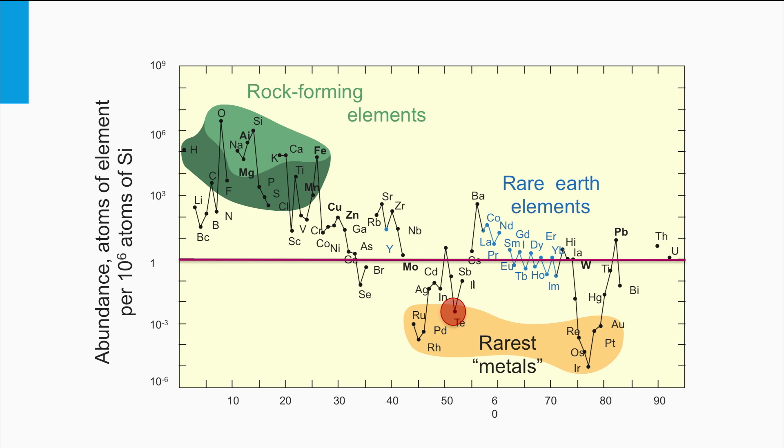As you can see, tellurium is not a very abundant element. So tellurium supply might be the limiting step to upscale the cadmium telluride PV technology to future terawatt scales.